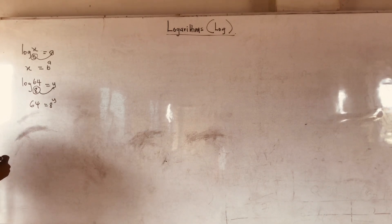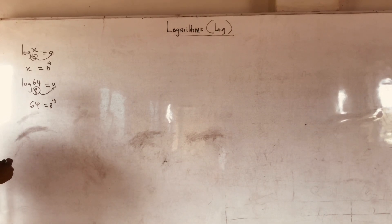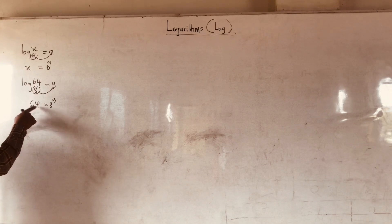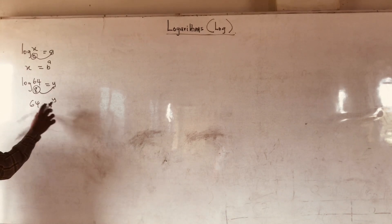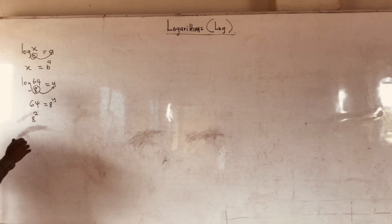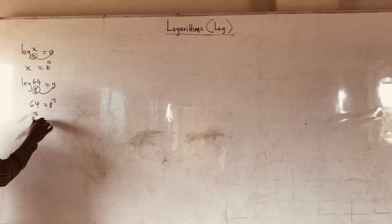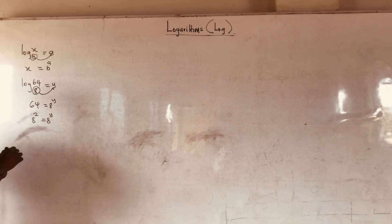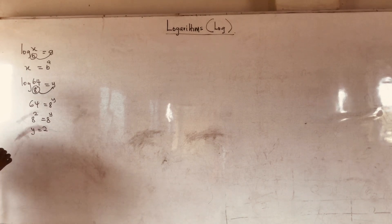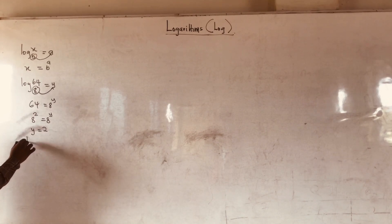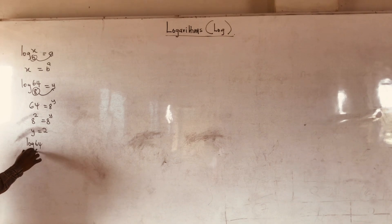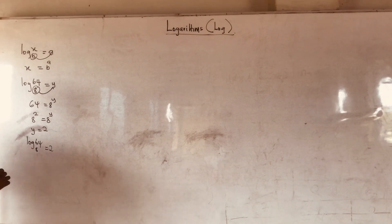You apply some indices here because this is 8 raised to the power y. You will also break the 64 so that you can have a common base, and that will be 8 raised to the power 2, equal to 8 raised to the power y. Therefore we can say y equal to 2. Therefore we can conclude that log 64 base 8 is equal to 2.